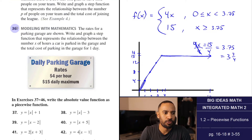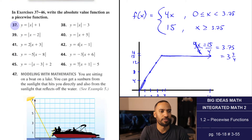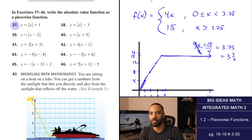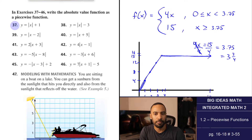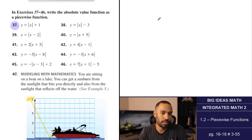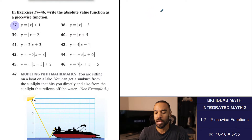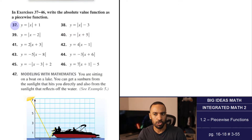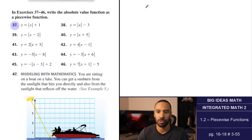Exercises 37 through 46: write the absolute value function as a piecewise function. As mentioned earlier, absolute value functions can be expressed as piecewise functions because they behave differently across two parts of the domain. For y equals absolute value of x plus 1, it can help to sketch the graph first, then identify the two linear pieces separated at the vertex.